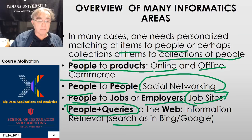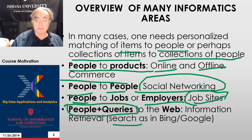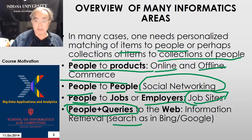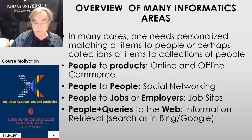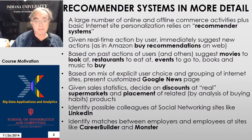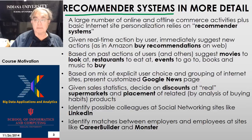You're given an initial query — whether it's the name of a person or the name of a product — and you actually want to find related things in another space: the space of things to buy, the space of people to know, the space of jobs to apply to, and so on. So that's recommender systems — they're a key technology.